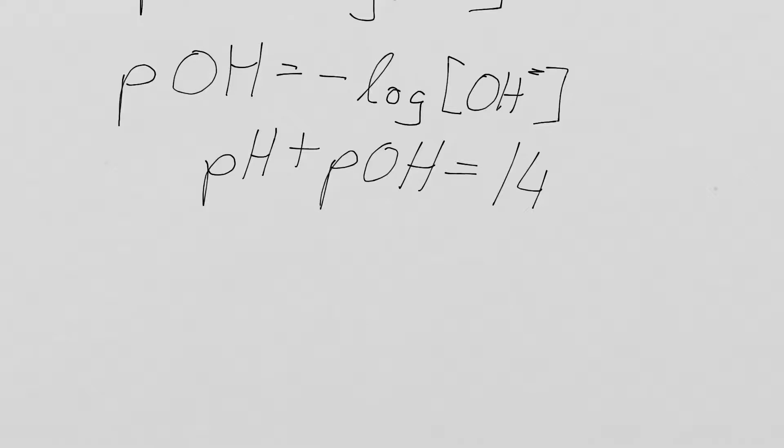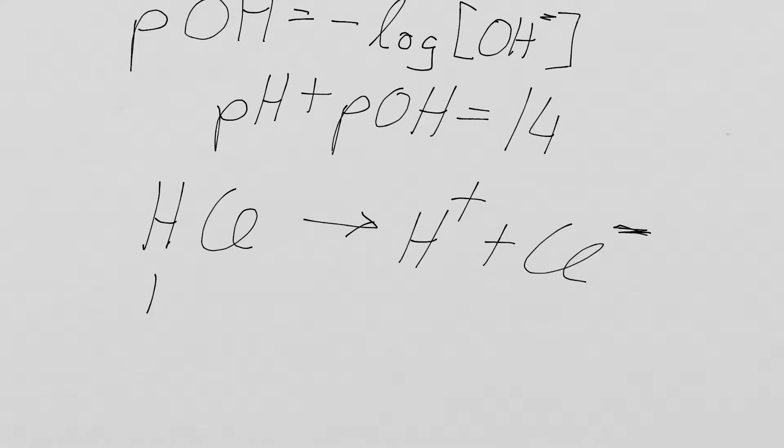We also had the relationship between pH and pOH, where we said pH plus pOH equals 14. This 14 is true for water. It's not true for any other solvents. We said this holds true if we have, for example, a strong acid like HCl, which basically completely dissociates into H plus plus Cl minus. You're happy with that?